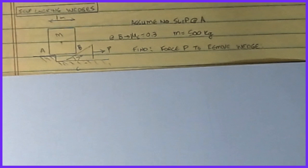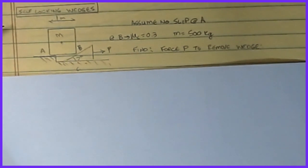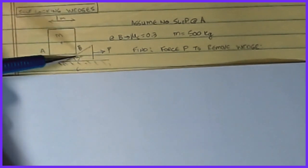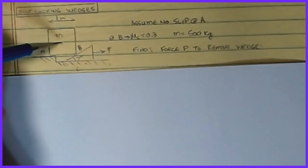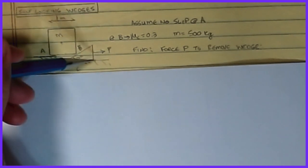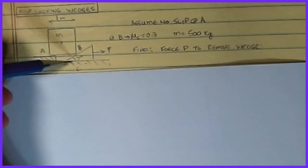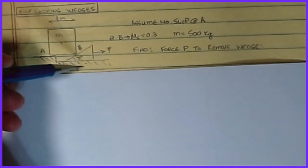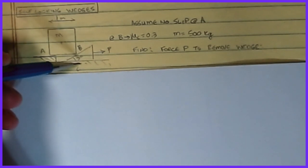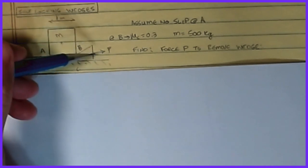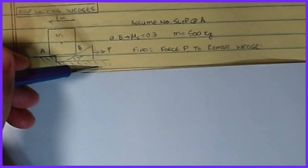Now we move to self-locking wedges. Imagine a block sitting on a step with a wedge placed under one corner. Without friction, the weight would thrust the wedge out. But with sufficient friction, the friction force at the interface never overcomes the sliding limit — F_max — so you'd actually have to apply a load P to pull the wedge back out. That's what we call a self-locking wedge.